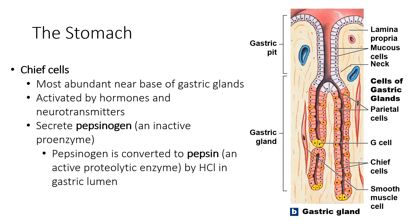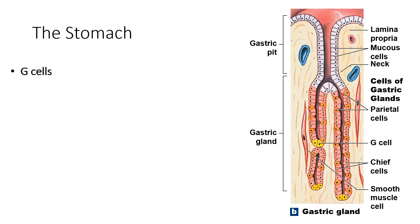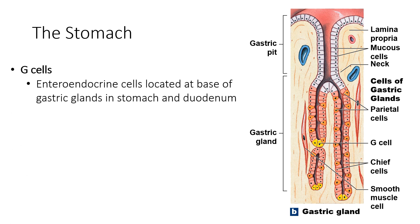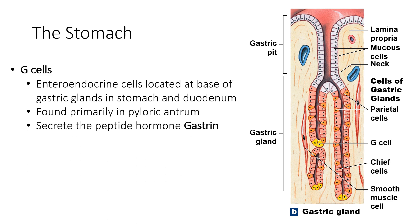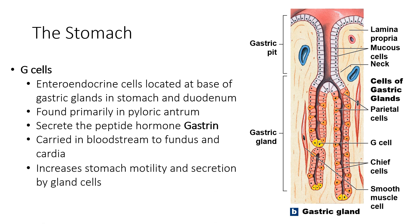For the chief cells, these are most abundant near the base of gastric glands. They are activated by hormones and neurotransmitters and secrete pepsinogen as an inactive proenzyme. Pepsinogen is converted to pepsin — an active proteolytic enzyme — by HCl in the gastric lumen. The G cells are enteroendocrine cells located at the base of gastric glands in the stomach and duodenum, found primarily in the pyloric antrum. They secrete the peptide hormone gastrin, which is carried in the bloodstream to the fundus and cardia, increasing stomach motility and secretion by gland cells.